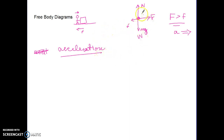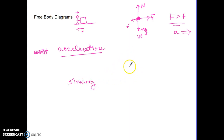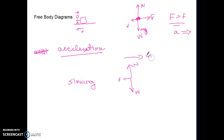If the object is moving to the right and the net force is to the right, the object is speeding up. If the person stops pushing, only the normal force, weight, and friction remain. The object is still moving right, but the friction force is to the left, meaning the net force opposes motion — so the object is slowing down.